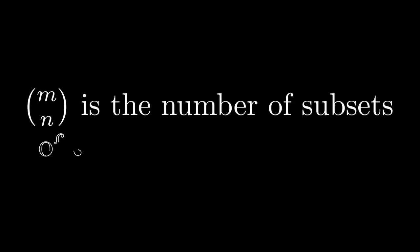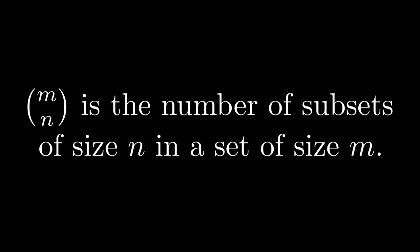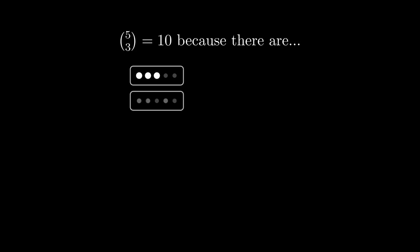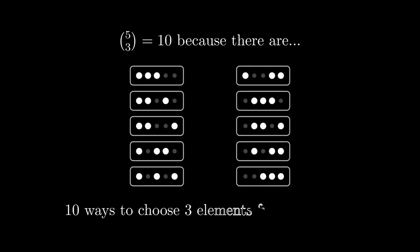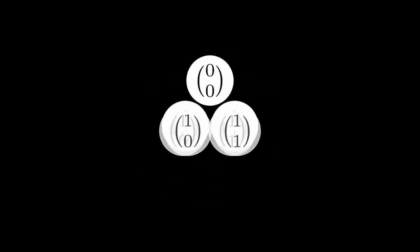Pascal's triangle is also related to binomial coefficients. Recall that the binomial coefficient m choose n is the number of ways to choose n objects from a set of size m. For example, 5 choose 3 is 10, since there are 10 ways to choose 3 objects from a set of 5. As it turns out, the algorithm which we described for Pascal's triangle makes it a table of binomial coefficients in the following way.